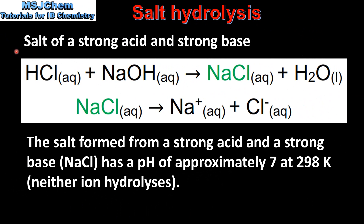Let's start with the salt of a strong acid and a strong base. Sodium chloride is produced in the reaction of a strong acid, hydrochloric acid, with a strong base, sodium hydroxide. The sodium chloride dissociates into sodium ions and chloride ions. The salt formed from a strong acid and a strong base has a pH of approximately 7 at 298 K, because neither ion hydrolyzes.